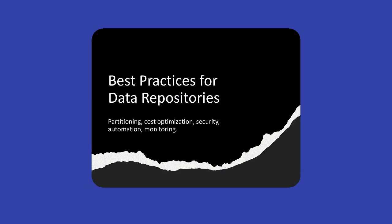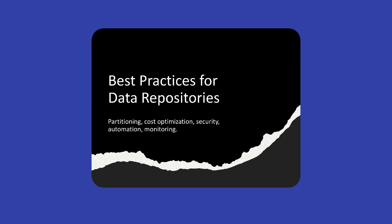Best practices for managing data repositories: use data partitioning to improve query performance by splitting data into smaller segments and optimize storage costs. Use Amazon S3 lifecycle policies to archive infrequently used data. Ensure data security by enabling AWS IAM roles, encryption, and VPC endpoints for secure data transfer. Automate data pipelines using AWS Glue, Lambda, or Step Functions for automated data ingestion and transformation. Monitor data regularly — check for missing values, duplicates, and inconsistencies before training models.